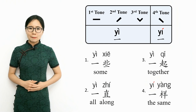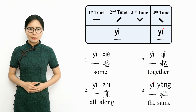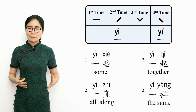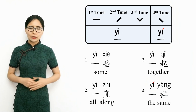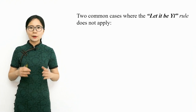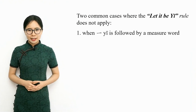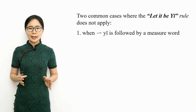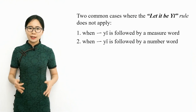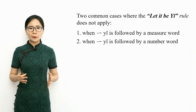To summarize: if the 'let it be Yi' rule applies, then Yi has its default tone, the first tone. Otherwise, if Yi is followed by a syllable using the first, second, or third tone, Yi will change to the fourth tone. Or if Yi is followed by a syllable using the fourth tone, Yi will change to the second tone. Two common cases where the rule does not apply: when Yi is followed by a measure word, and when Yi is followed by a number word to say one hundred, one thousand, or any larger number — the tone for Yi depends on the tone of that measure word or number word.